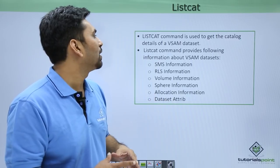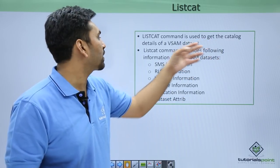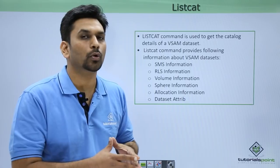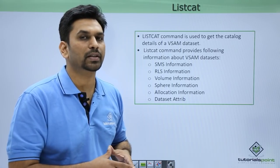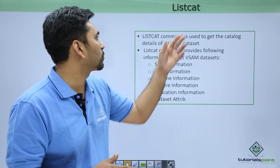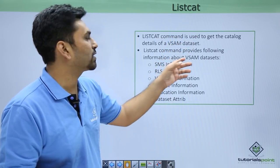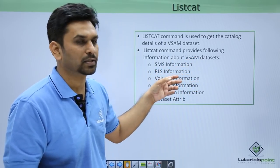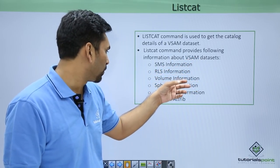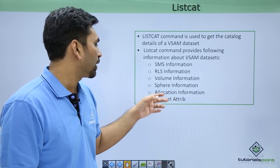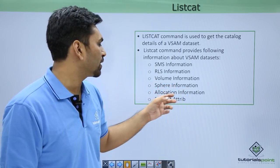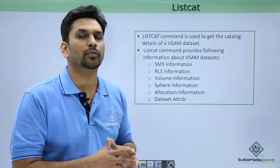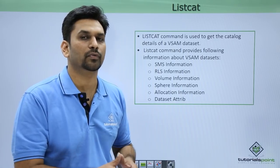The LISTCAT command is used to get the catalog details of a VSAM data set. If you want to know the details about your VSAM data set, you can use the LISTCAT command. It provides information such as SMS information, RLS information, volume information, sphere information, allocation information, and data set attributes.